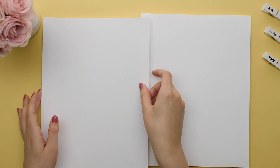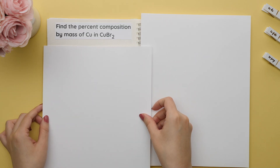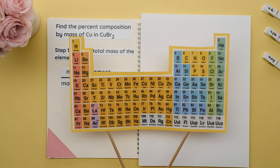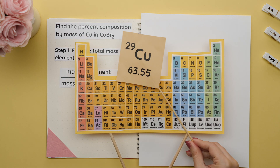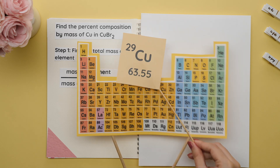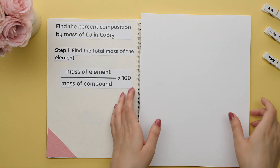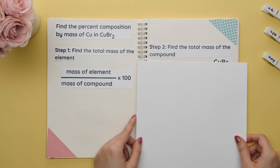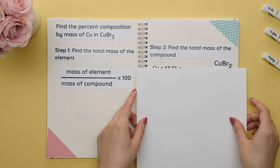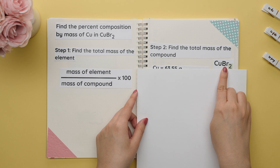In this example we are asked to find the percent composition by mass of copper in copper(II) bromide. Step one is to find the total mass of the element. Using our periodic table we'll find the mass of copper. Copper's mass is 63.55 grams — this goes on top.